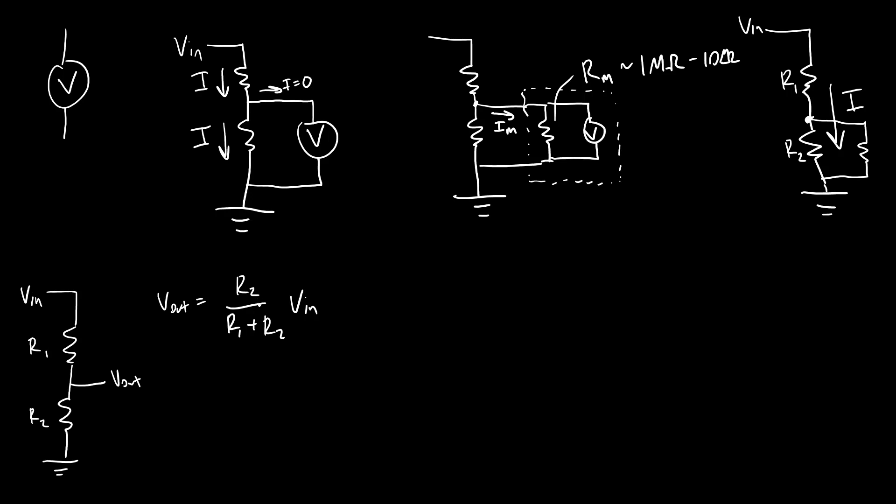As R2 gets smaller and R1 gets really, really large, this fraction will approach zero, and Vout will approach zero. So what happens if we add a second resistor in parallel to R2 there, is we are making this equivalent R2 smaller.